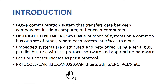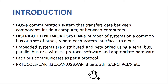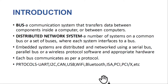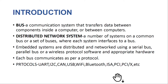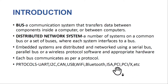In serial communication, data is sent one bit at a time in a sequential manner. We also have Bluetooth and Wi-Fi, which are wireless protocols. And then we have ISA, PCI, and PCIX, which are parallel communication protocols, where multiple bits are sent simultaneously.